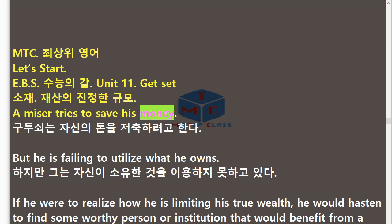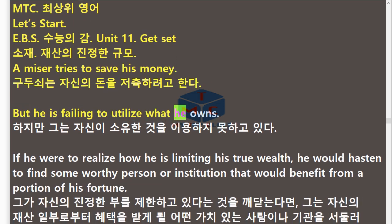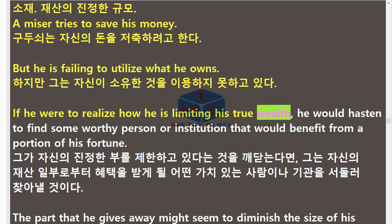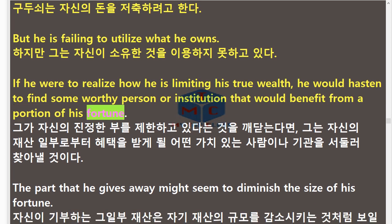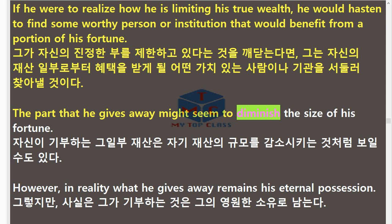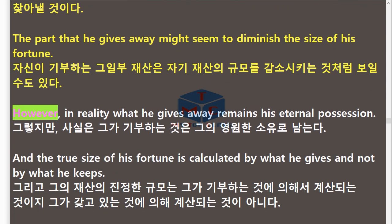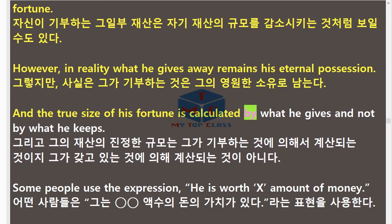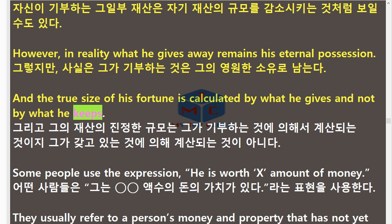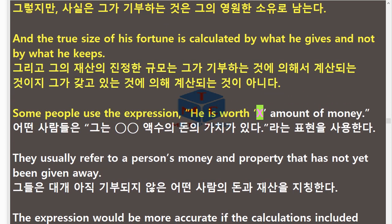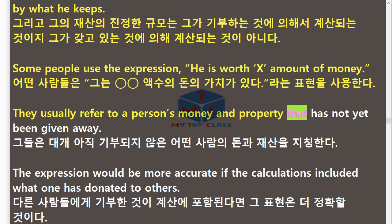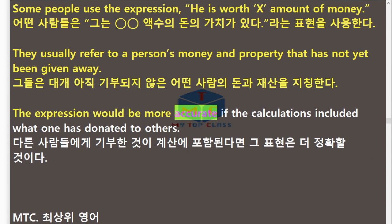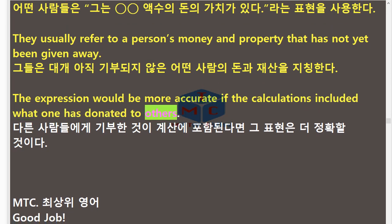A miser tries to save his money, but he is failing to utilize what he owns. If he were to realize how he is limiting his true wealth, he would hasten to find some worthy person or institution that would benefit from a portion of his fortune. The part that he gives away might seem to diminish the size of his fortune. However, in reality what he gives away remains his eternal possession. And the true size of his fortune is calculated by what he gives and not by what he keeps. Some people use the expression 'he is worth X amount of money.' They usually refer to a person's money and property that has not yet been given away. The expression would be more accurate if the calculations included what one has donated to others.